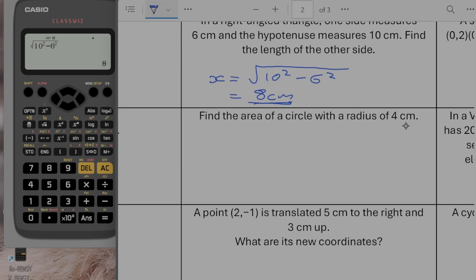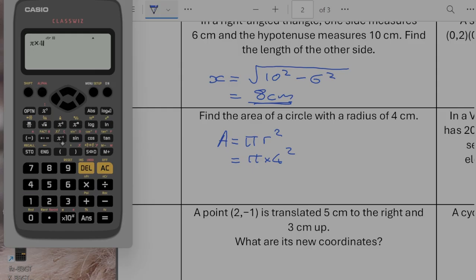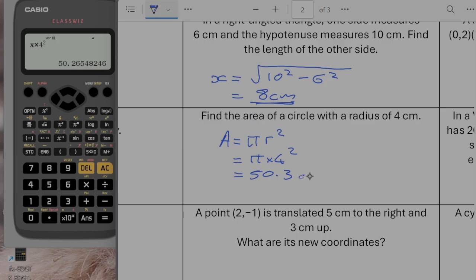Find the area of a circle with a radius of 4 centimetres. So the area of a circle is pi r squared. So that's going to be pi times by 4 squared. And we can type it in like that. So shift pi times by 4 squared gives us 16 pi or as a decimal. I'm going to go 50.3 centimetres.